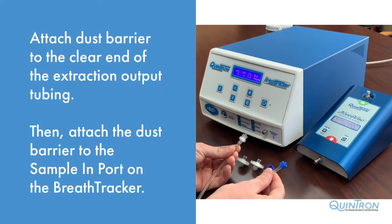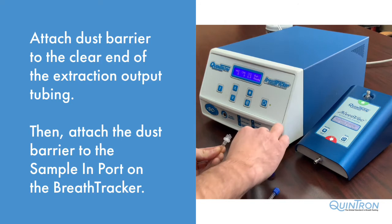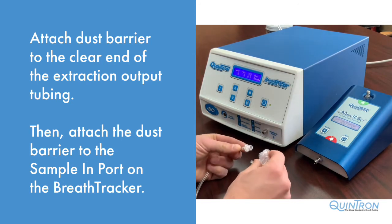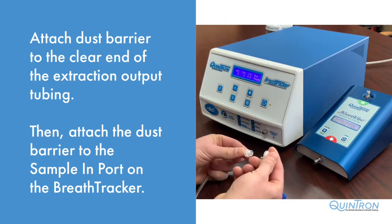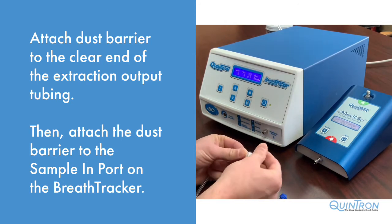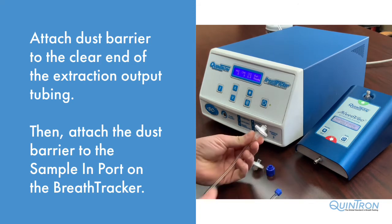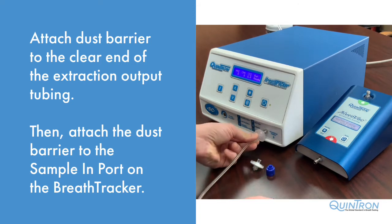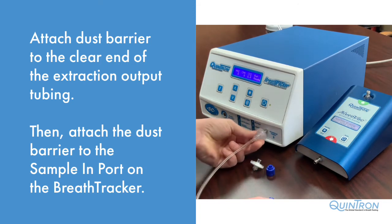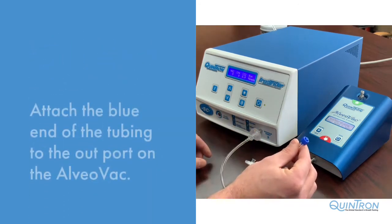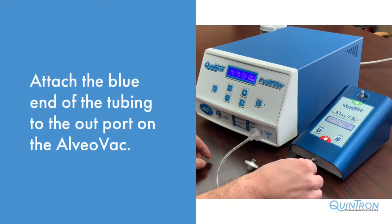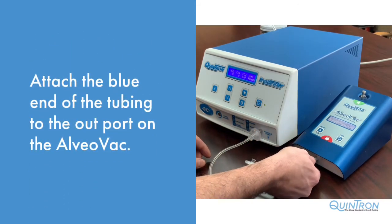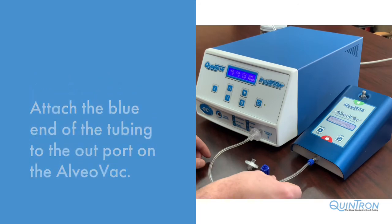Attach one dust barrier to the clear end of the extraction output tubing, and then attach that dust barrier end to the sample in port on the front of the Breath Tracker. Attach the blue end of the output tubing to the out port on the Alveobac.